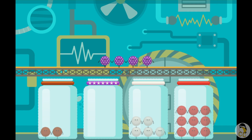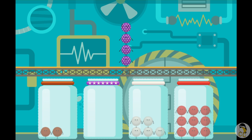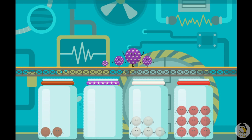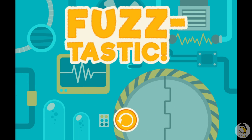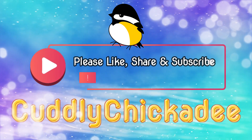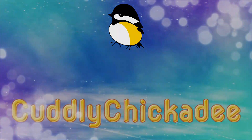Which fuzz bug is all the way to the left? Tap on it. Tap on the fuzz bug that is on top. Tap on the fuzz bug that is on the bottom. Tap on the largest fuzz bug. Tap on the smallest fuzz bug. Fantastic! Tap on the smallest fuzz bug.